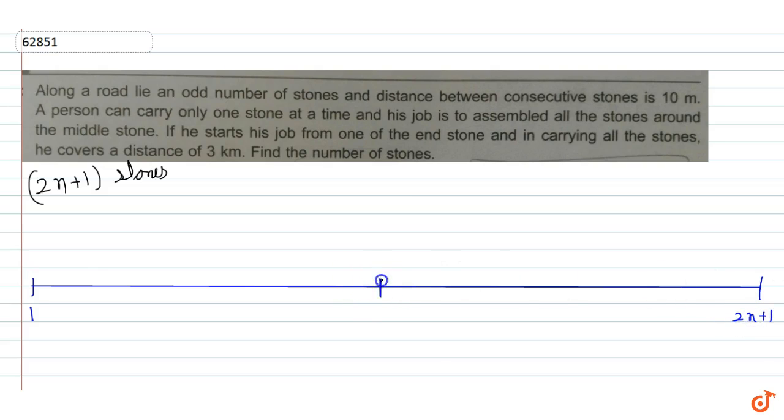And the middle stone, if I see, middle stone is n plus 1. Each stone is at a distance of 10 meters, which is given.